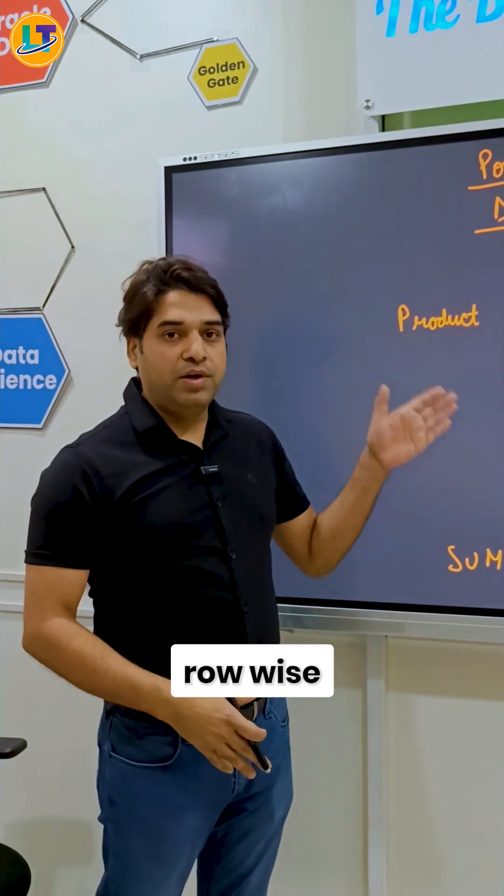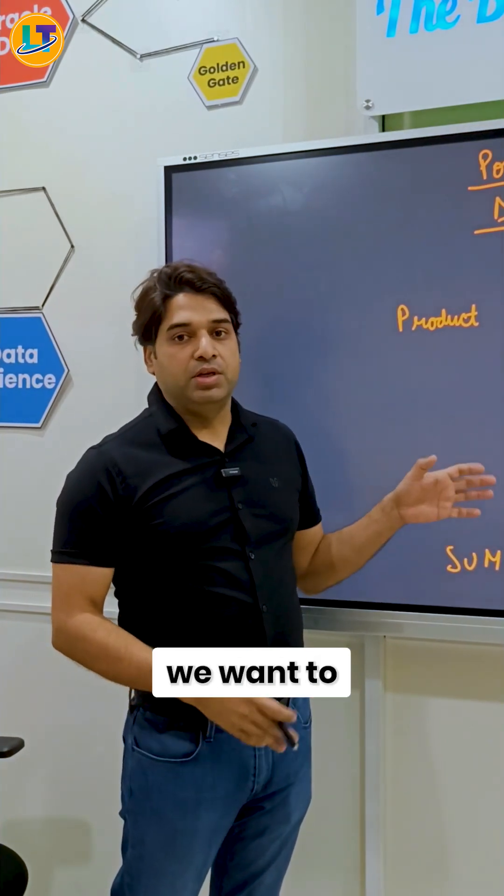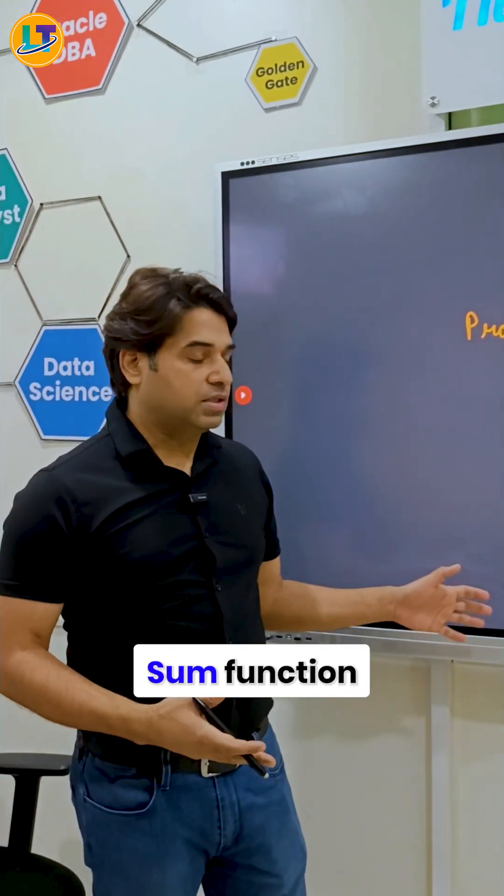When we have to calculate row-wise calculation, we will use SUMX. When we want a single output, we will use the SUM function.